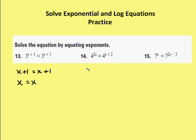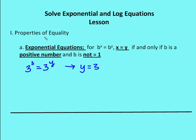In the next problem, number 14, I have 4 to the 2x is equal to 4 to the x plus 2. That means 2x is equal to x plus 2. Just to step back and refresh your memory — we were talking about equating exponents. Remember: if the bases are the same, then we can eliminate the bases and just use the exponents as part of an algebraic expression. The properties of equality for exponential equations say that when b to the x equals b to the y, then x equals y, provided b is a positive number and b is not 1.